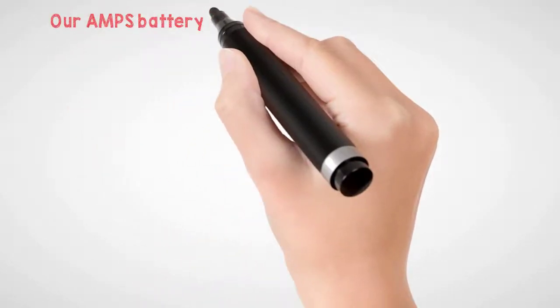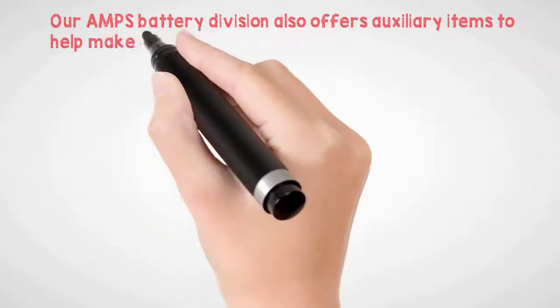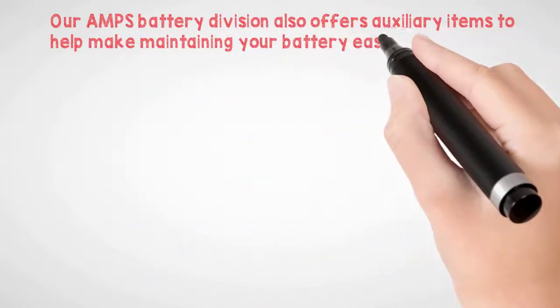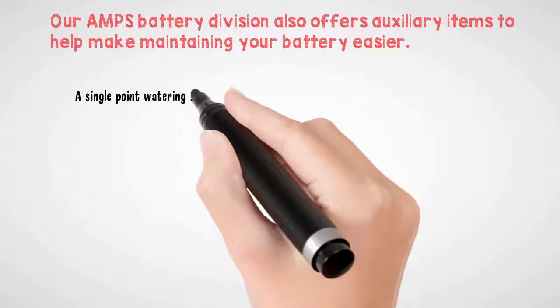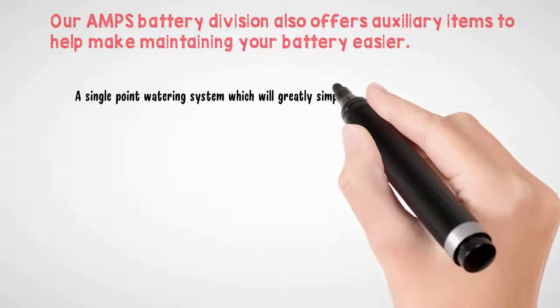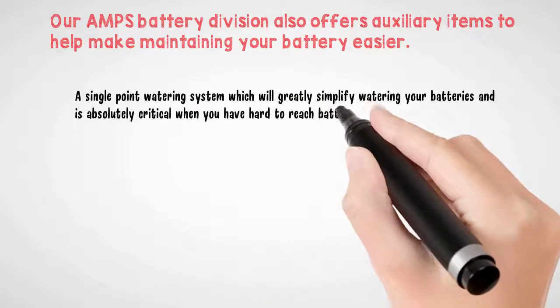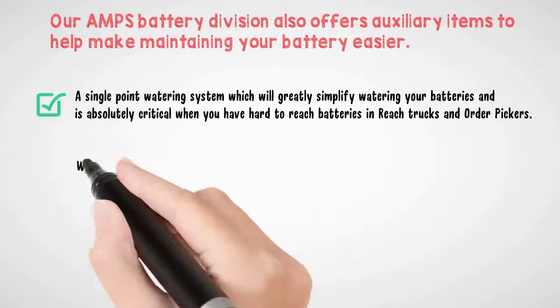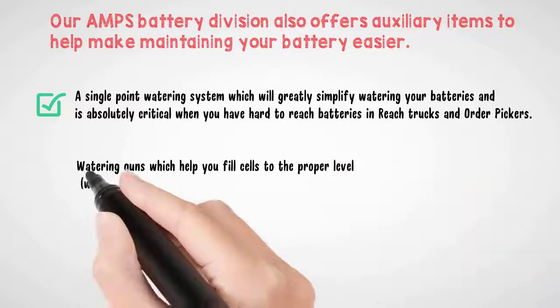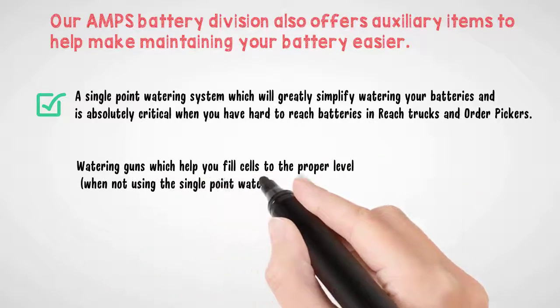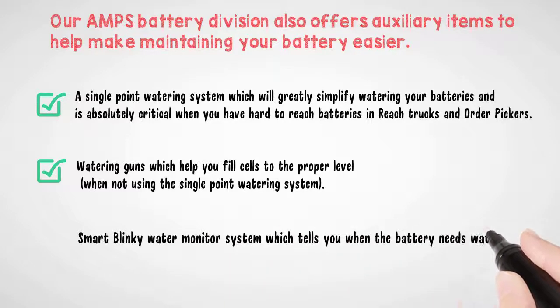Number 10: Our Amps Battery Division also offers auxiliary items to help make maintaining your battery easier. These include a single-point watering system, which will greatly simplify watering your batteries and is absolutely critical when you have hard-to-reach batteries in reach trucks and order pickers. Watering guns, which help you fill cells to the proper level when not using the single-point watering system. Smart Blinky Water Monitor System, which tells you when the battery needs water.